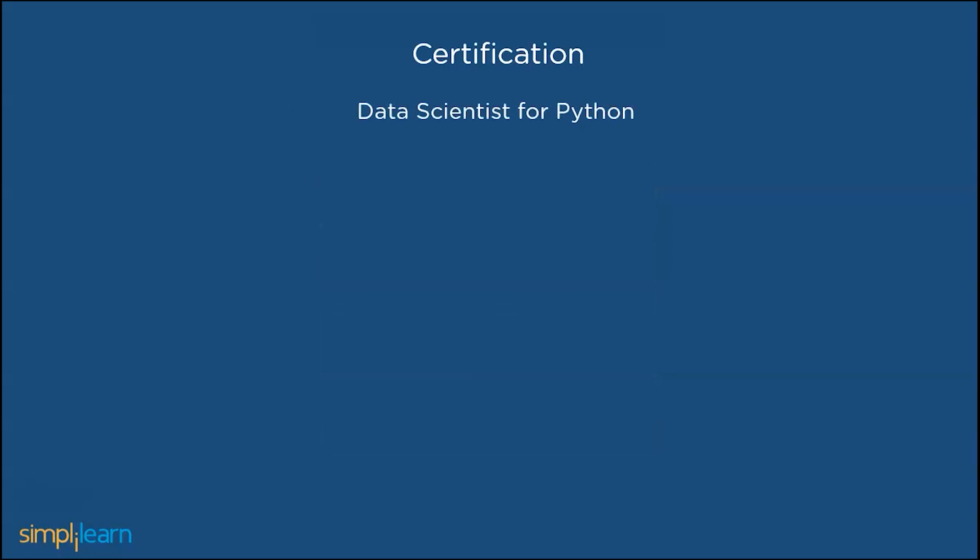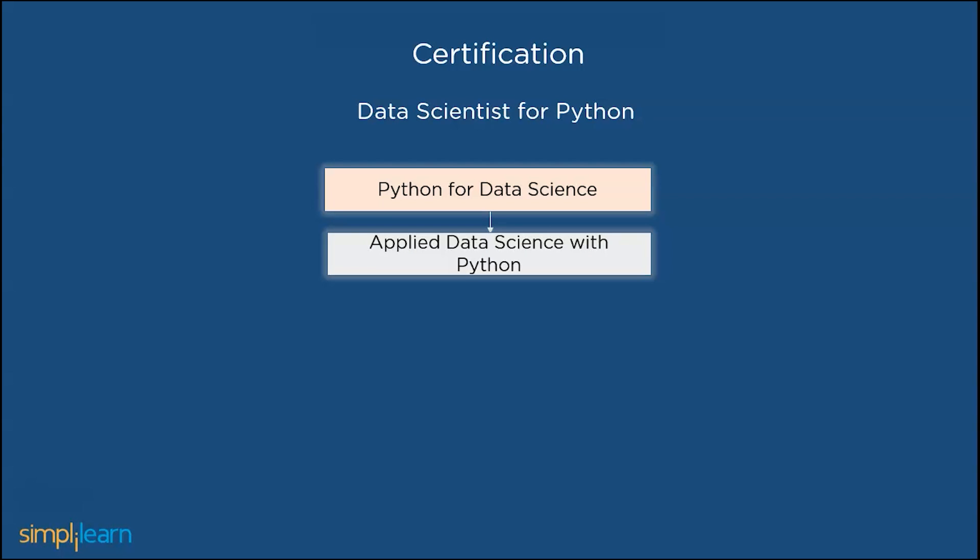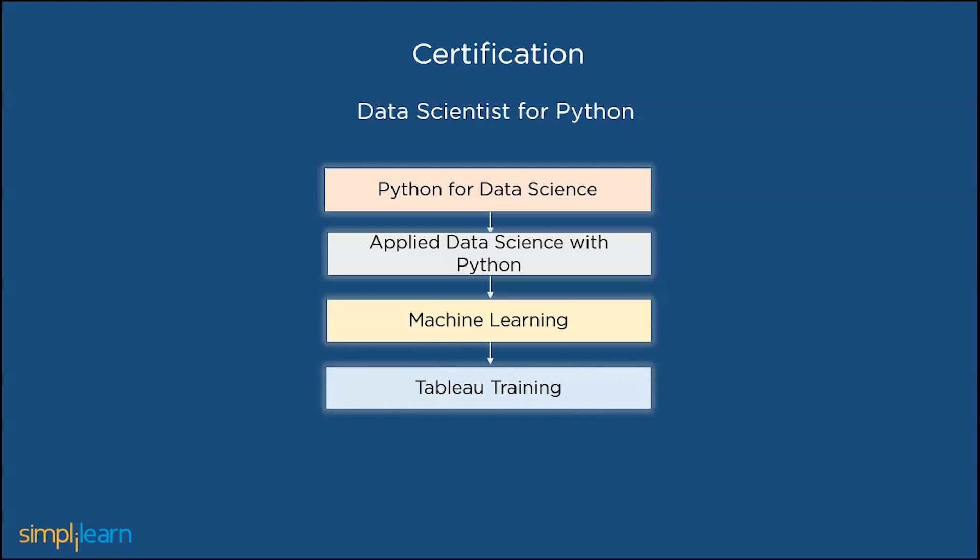Data Scientist for Python. It is the best course for a beginner. It includes five courses in collaboration with IBM at an affordable price. Courses include Python for Data Science, applied data science with Python, machine learning, as well as Tableau training, and data science capstone. And finally, receive a master's certificate with individual certification for each course. I will provide the link for this course in the description below.